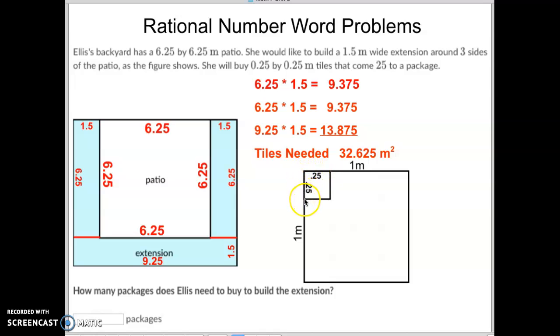To fill up one square meter, you can see we would need four going this way, and then we would need four going this direction as well. So that makes a grand total of 16 tiles. So it takes 16 of these tiles to make one square meter.